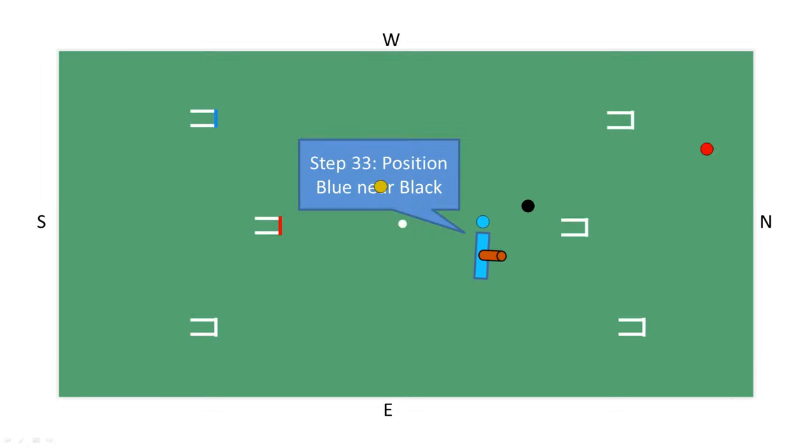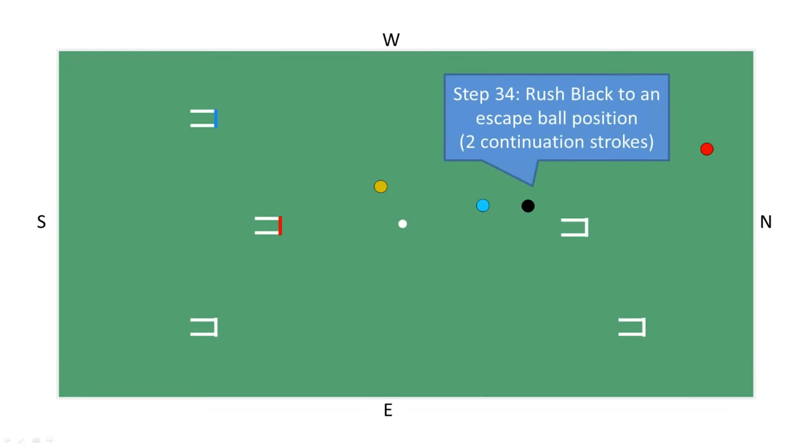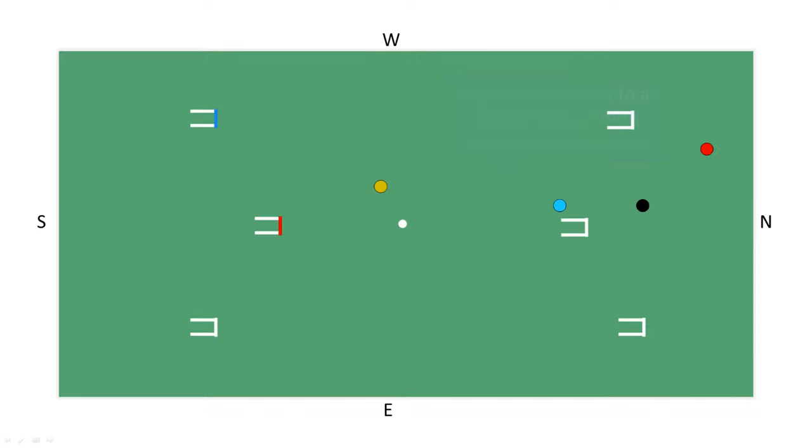Using its two continuation strokes, blue first positions near the black ball and then rushes black into an escape ball position to gain a further two strokes. First it sets up to run hoop 6 and then runs it.